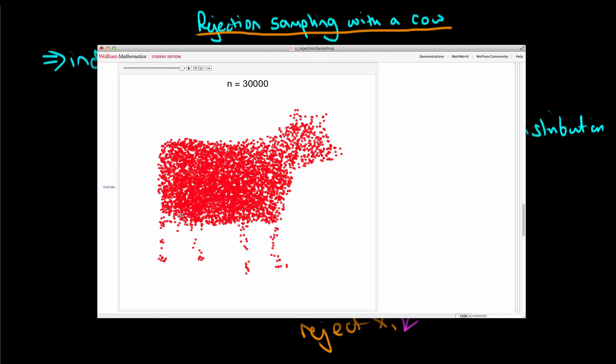But after about 30,000 points we're getting a fairly good representation of the underlying shape of that distribution.